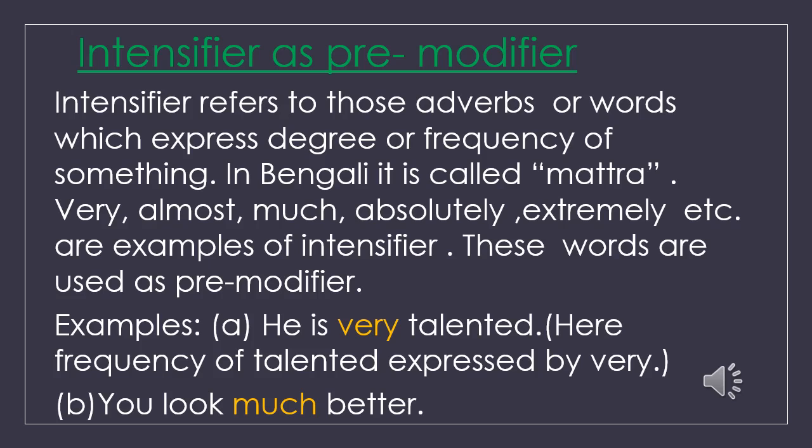Dear learners, we have come to the end of the class. Now we will discuss intensifier as premodifier. Intensifier refers to those adverbs or words which express degree or frequency of something. In Bengali, it is called 'matra.' Very, almost, most, absolutely, extremely, etc. are examples of intensifiers. These words are used as premodifiers. Example A: 'He is very talented.' Here, the degree of 'talented' is expressed by 'very.' Example B: 'You look much better.' Here, 'very' and 'much' are used as premodifiers of 'talented' and 'better.'